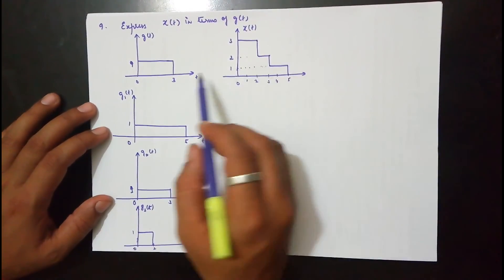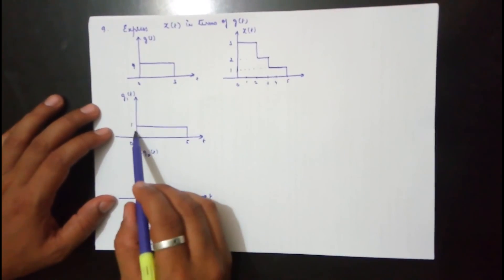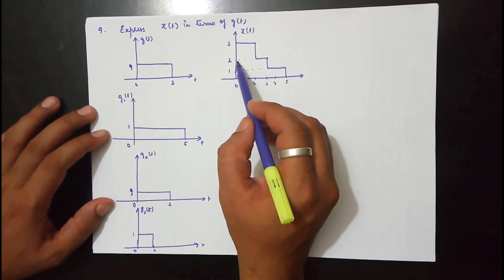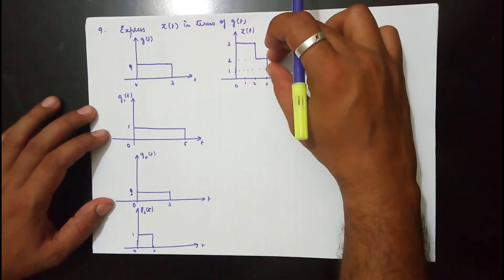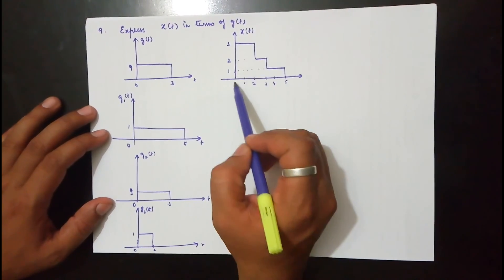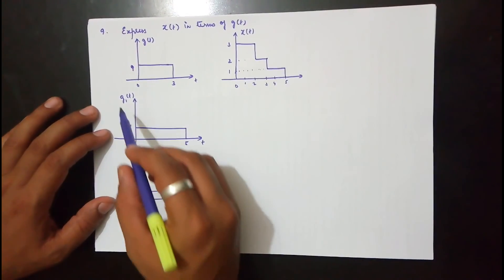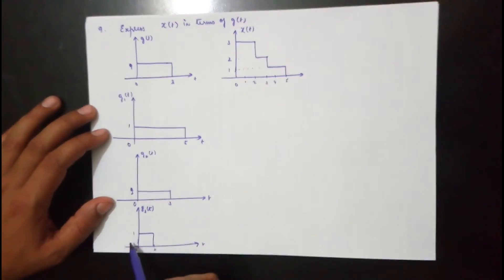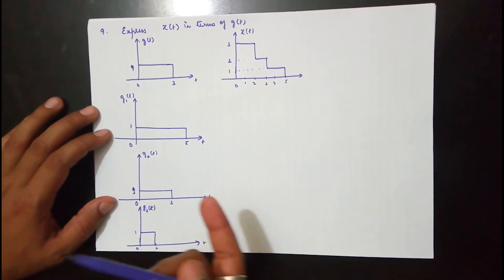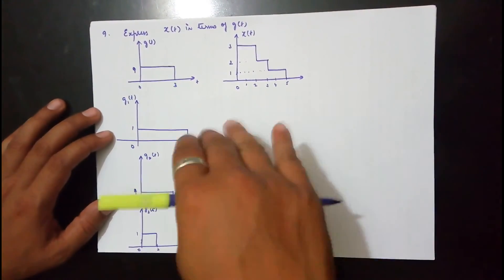If I slice it up into 3 waveforms, I will get a waveform extending between 0 to 5 with an amplitude of 1, and 0 to 3 with an amplitude of 1. One more slice is from 0 to 2 with an amplitude of 1. So I can split signal x(t) into g1(t), g2(t), and g3(t) extending between 0 to 5, 0 to 3, and 0 to 2. If I add them together, I will get this waveform — we are slicing it horizontally.